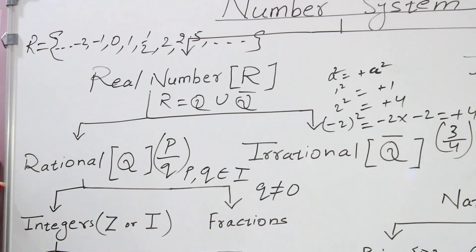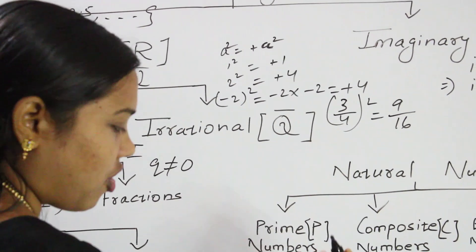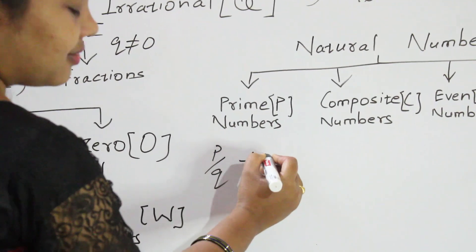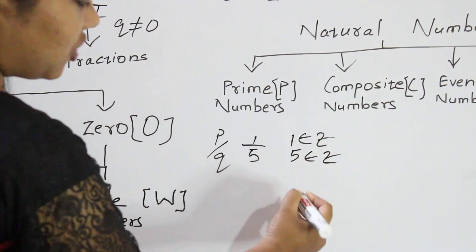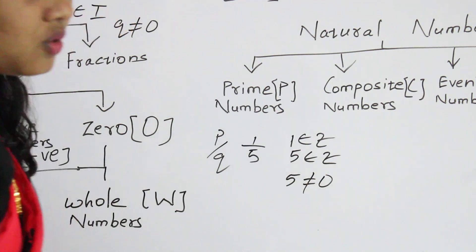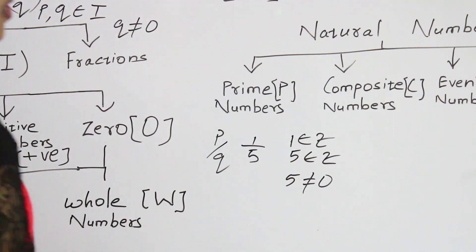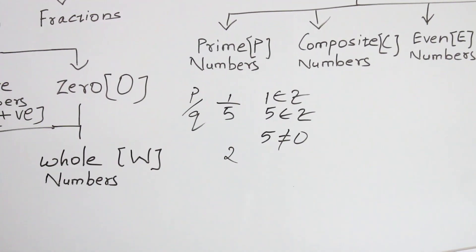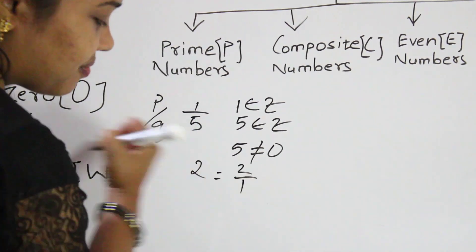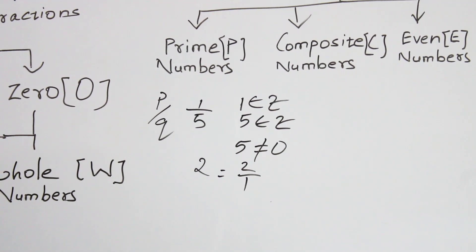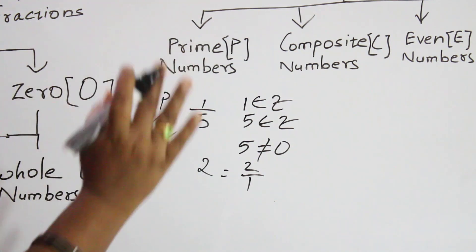Let us see some examples of rational numbers. Example 1: 1/5 is in the form P/Q where 1 (numerator) is an integer, 5 (denominator) is also an integer, and the denominator 5 ≠ 0. So 1/5 satisfies all the conditions and is a rational number. Example 2: 2 is also a rational number because 2 can be written as 2/1, where 2 and 1 are both integers and 1 ≠ 0.